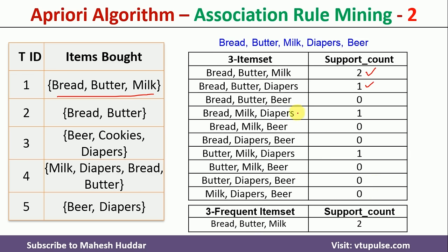Once we find the 3-frequent itemset, we check whether it is possible to write 4-frequent itemsets. Since this 3-frequent itemset has only 3 items, it is not possible to generate 4-frequent itemsets. So we stop here — that completes the generation of frequent itemsets.